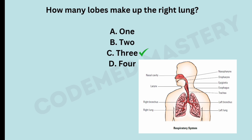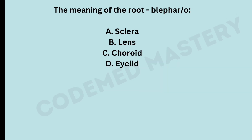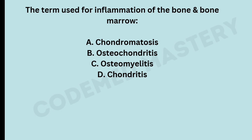The root word 'blepharo' means — option A: sclera, option B: lens, option C: choroid, option D: eyelid. The right answer is option D, eyelid.